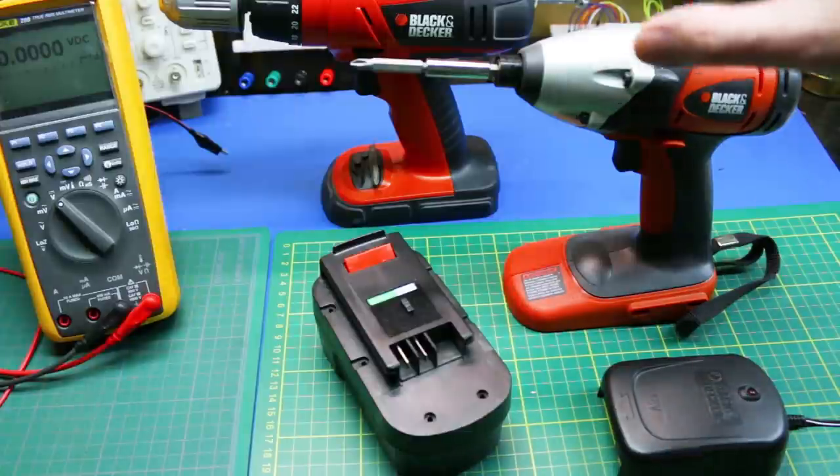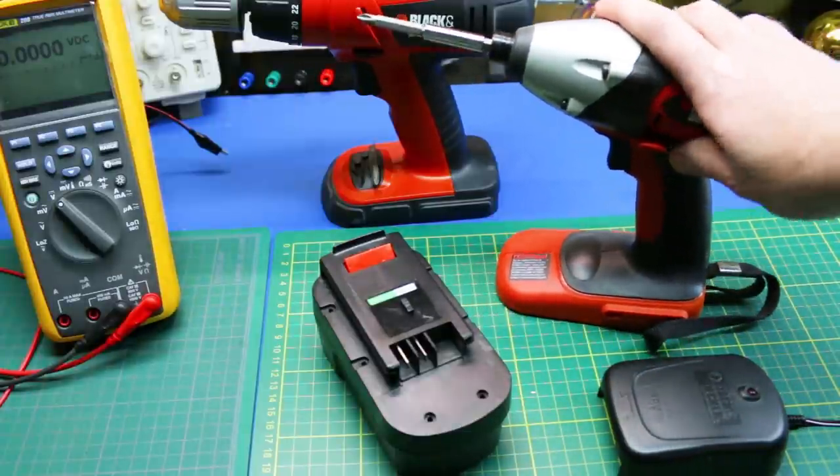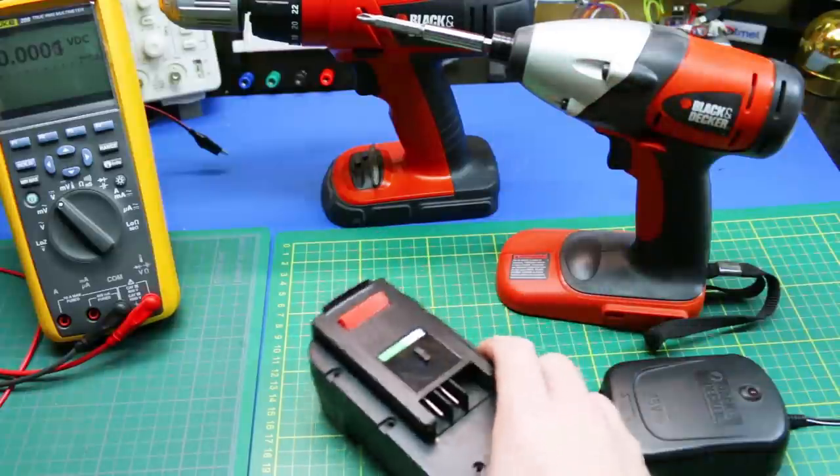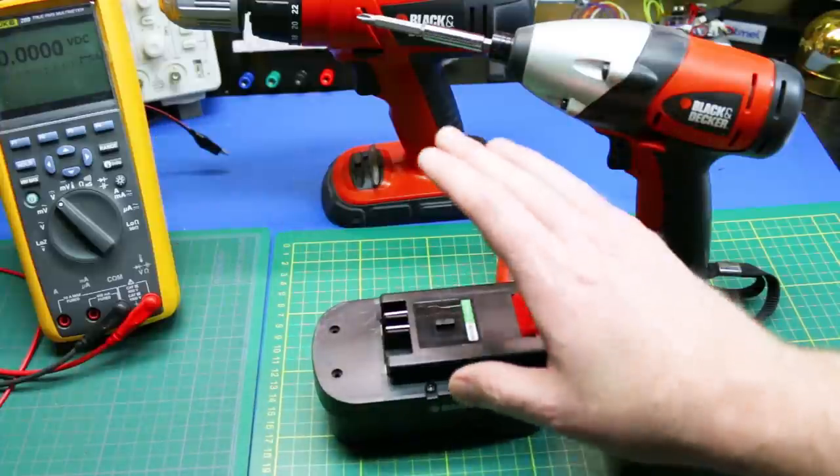Really quick one today guys. Last night I went to use my old Black and Decker drill and impact, 18 volt, and it failed to function. I checked the battery with my voltmeter and it ended up showing only about 13 volts.